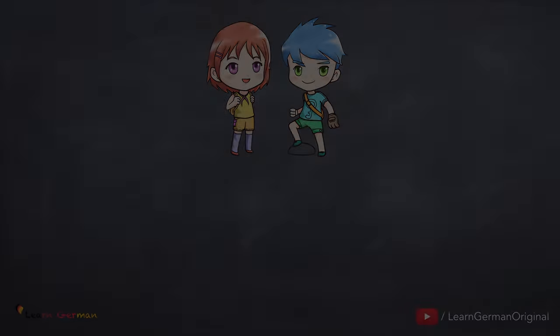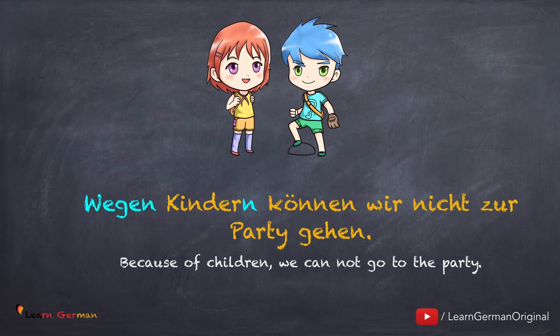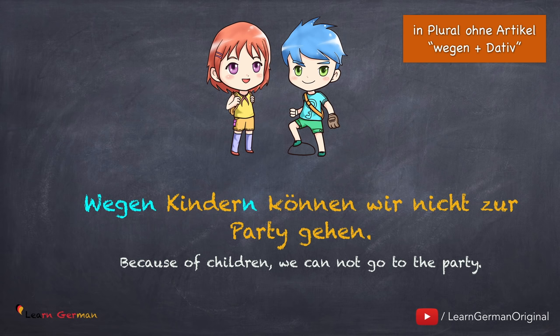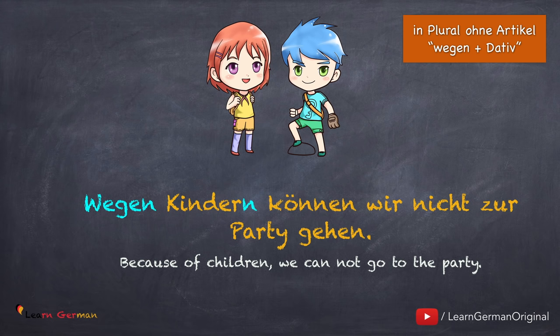Aber wenn der Artikel überhaupt fehlt — zum Beispiel: Wegen Kindern können wir nicht zur Party gehen — benutzt man in diesem Fall Dativ. Das heißt, die Pluralform 'Kinder' bekommt eine Dativ-Endung -n: 'Kindern'. So, with a noun in plural, you will use 'wegen' with Genitiv whenever there is an article — definite, indefinite or possessive. But if the article is missing, then the plural noun will get a dative ending, i.e. -n. 'Kinder' will change to 'Kindern', 'Leute' will change to 'Leuten', etc.